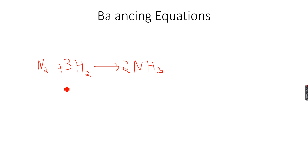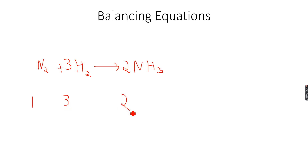What these coefficients tell us is that one mole of nitrogen reacts with three moles of hydrogen to give two moles of ammonia. The ratio between nitrogen and hydrogen is 1:3, and the ratio between nitrogen and ammonia is 1:2.